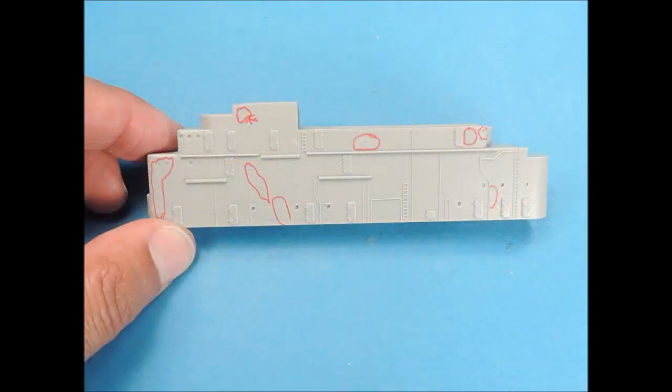There were surface imperfections on this flight deck island superstructure and they were carefully sanded out with fine grit sandpaper wrapped around lengths of balsa wood.